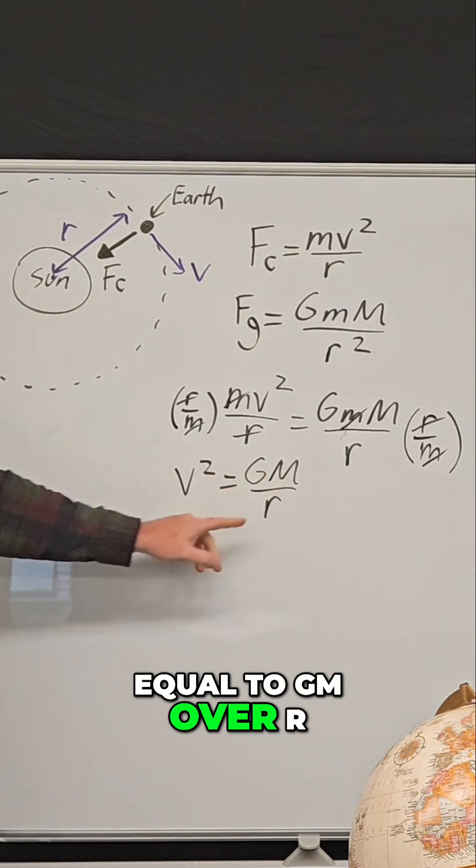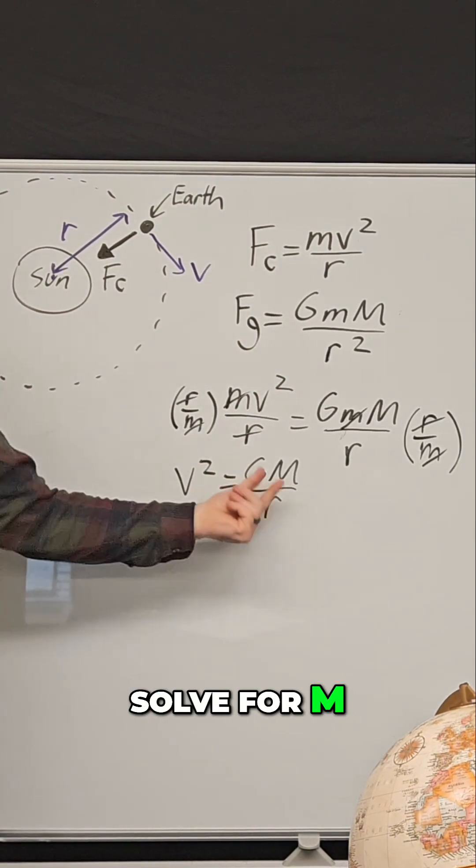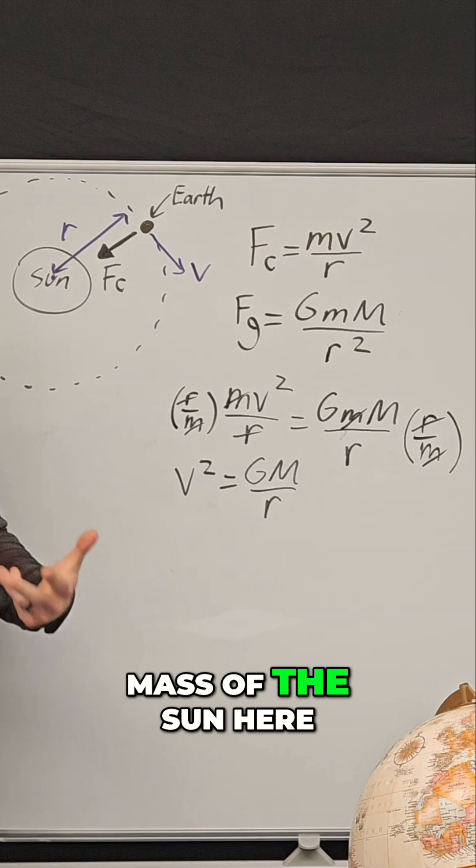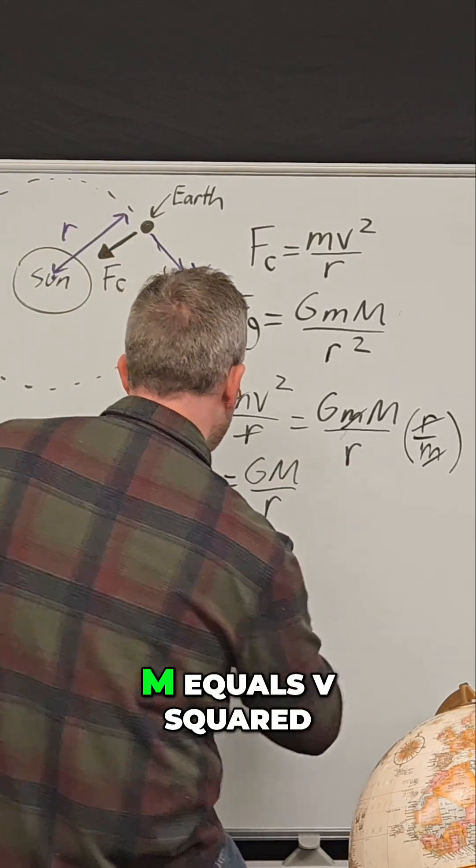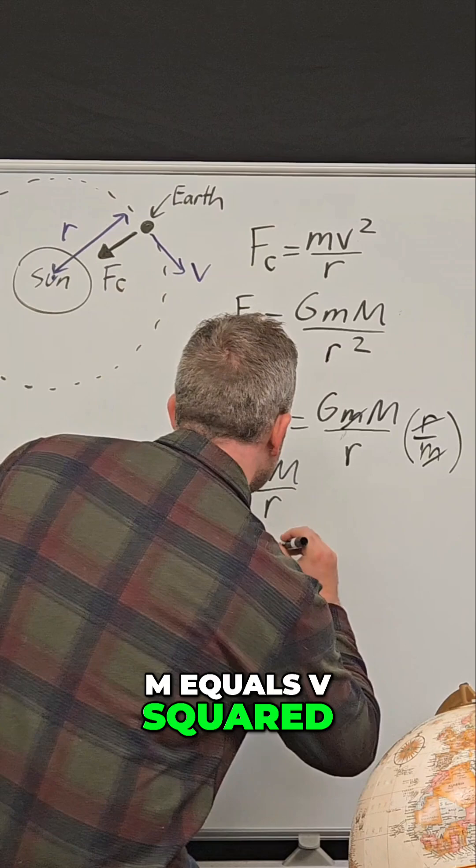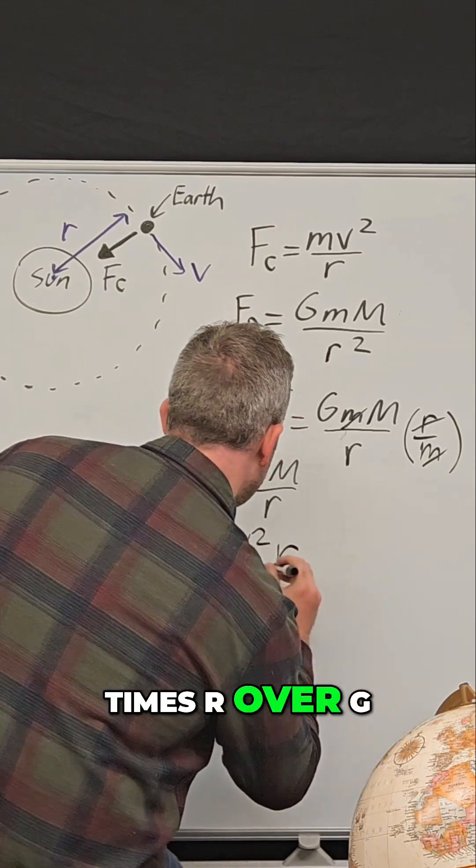V squared is equal to GM over r, but I wanted to solve for M. Remember, we're interested in the mass of the sun here, so I'm going to rewrite this equation.